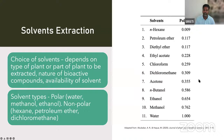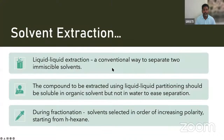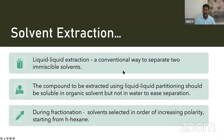In solvent extraction there are different methods. One is liquid-liquid extraction, a conventional way to separate two immiscible solvents. The compound to be extracted using liquid-liquid partitioning should be soluble in an organic solvent but not in water to ease separation. During fractionation, solvents are selected in the order of increasing polarity starting from hexane.